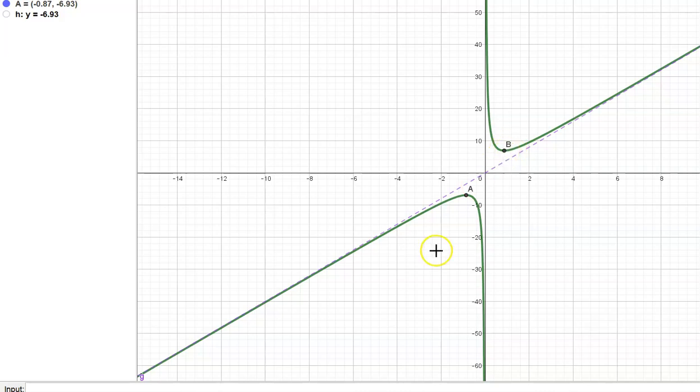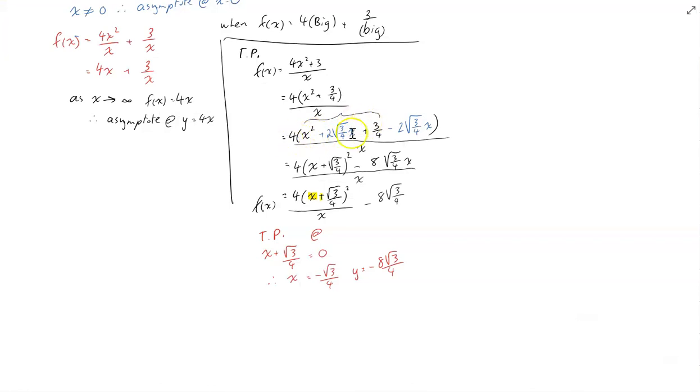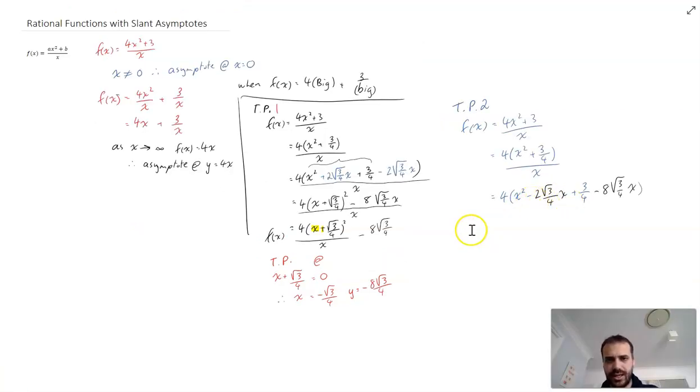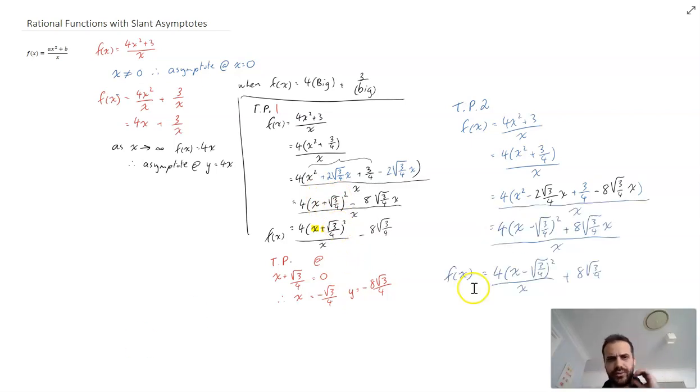But what about this point? We've found a point now, but what about the other point? I chose to complete the square using plus 2 root 3 on 4x, but I actually also could have completed the square with negative 2 root 3 on 4x. Placing that negative there instead, instead of having x plus root 3 on 4, our next line will be x minus root 3 on 4. It's all the way down to here, and a turning point that is the exact opposite of this turning point here.